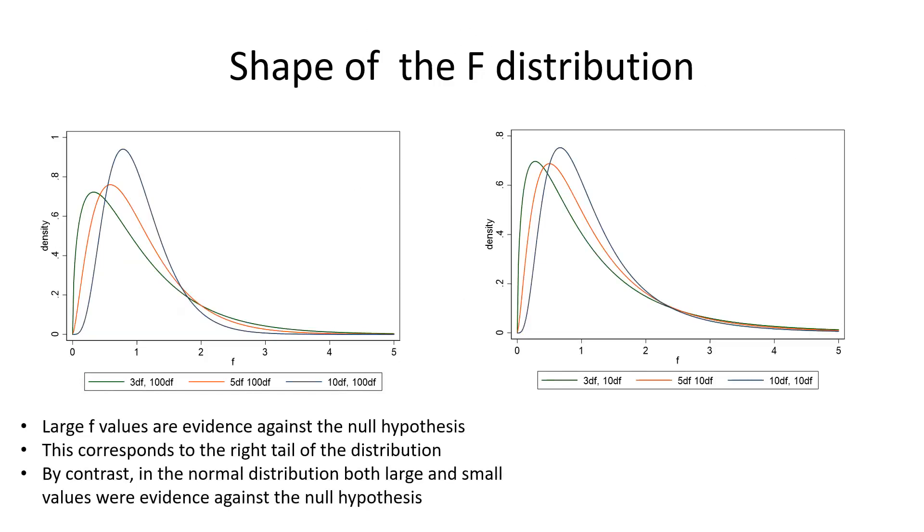Here we have two graphs of the distributions for different values for the degrees of freedom. On the right hand side, we have the denominator degree of freedom 10. On the left hand side, we have the denominator degree of freedom 100. And then each curve corresponds to different degrees of freedom in the numerator. If we observe a value that is very large, for example, four, then under the null hypothesis, the probability that we are four or even larger than four is really, really small.